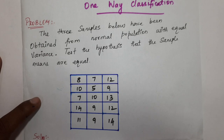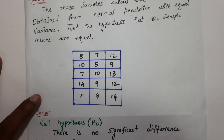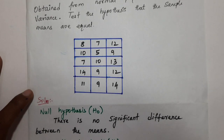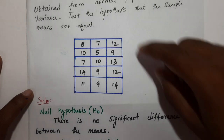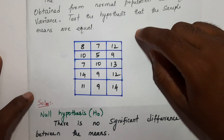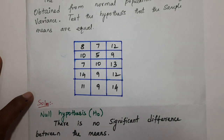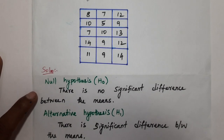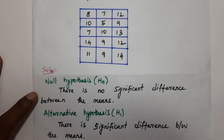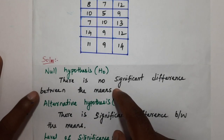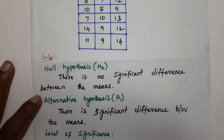Solution: The null hypothesis H0 states there is no significant difference between the means — that the sample means are equal. The alternative hypothesis H1 states there is a significant difference between the means, which is the opposite of the null hypothesis.